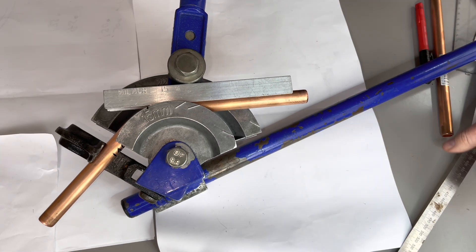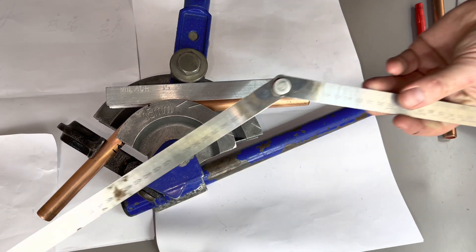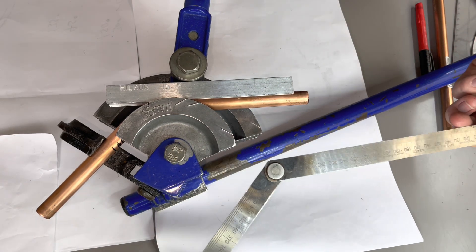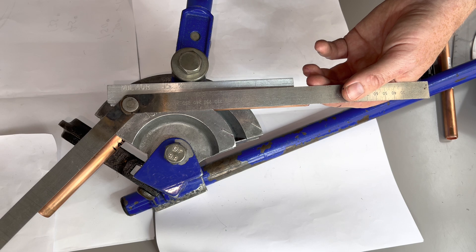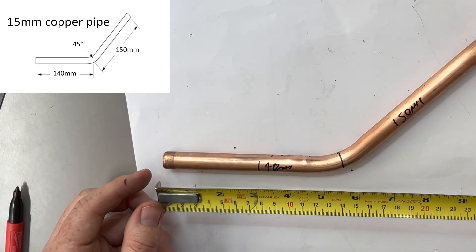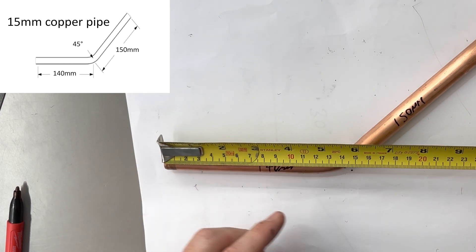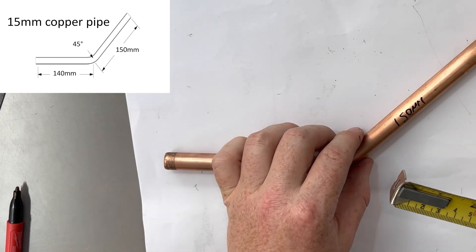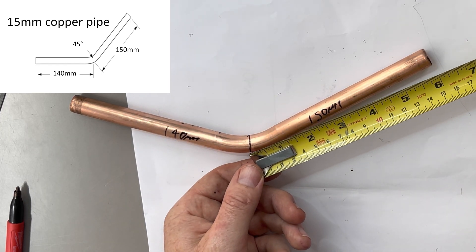Okay, we always double check the accuracy of our pipe bender by putting a folding ruler on the pipe to check the accuracy. Okay, so let's then check our measurements to the specification. So 140 mil to the center of the bend, then the other side needs to be 150 mil.